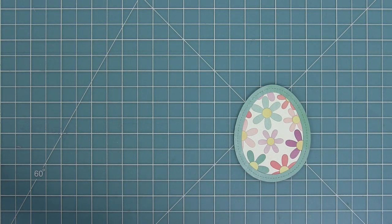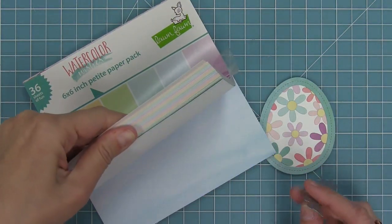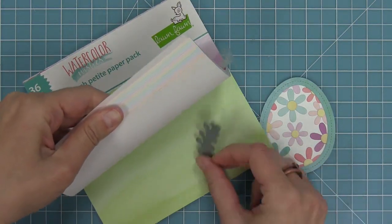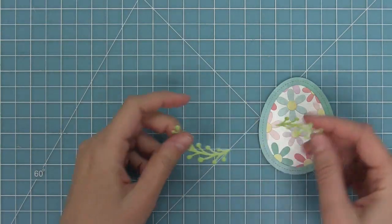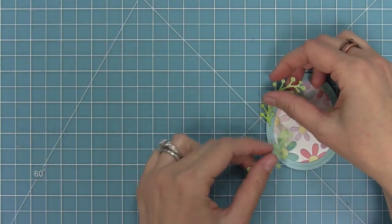To keep everything coordinating I'm going to use the green paper from the watercolor wishes and I'm going to die cut that with the spring sprig die and so I'll have two little sprigs there and those are going to decorate the side of my egg.